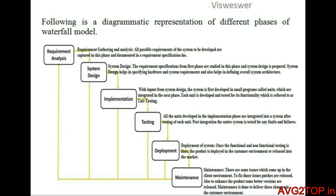There are six phases: requirement analysis, design, implementation, testing, deployment, and maintenance. We are going to see how the software is developed in an organization through all six phases, and once it reaches the last phase, how the software is completely implemented. The first one is requirement analysis.